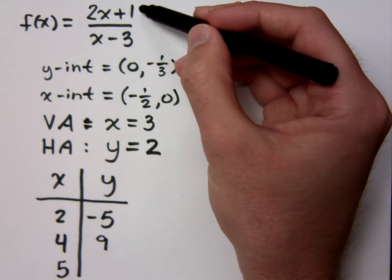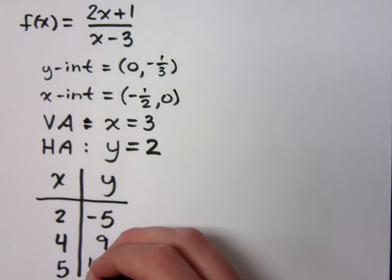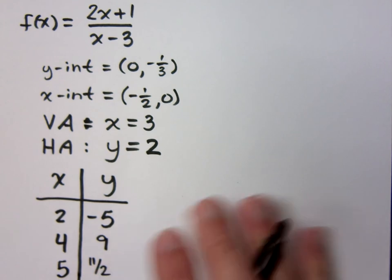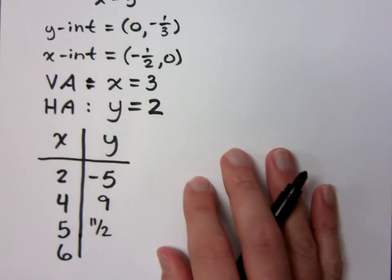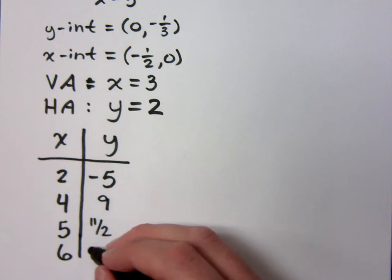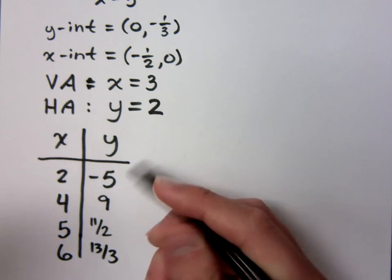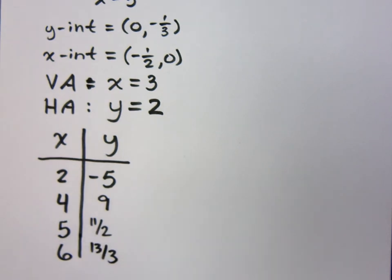Eleven over two. If I plug in six, let's do one more. Thirteen over three. Thirteen over three, so I get thirteen thirds. I'm going to take this information and let's go to the graph and see what we come up with.